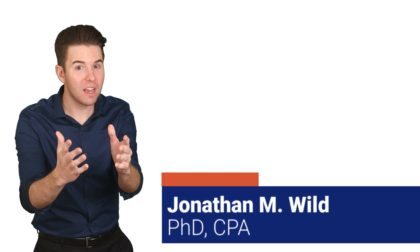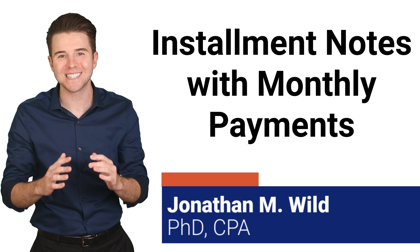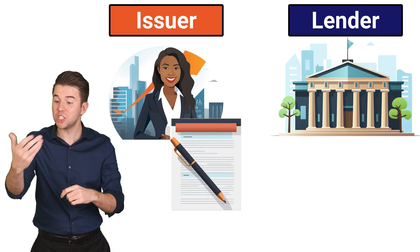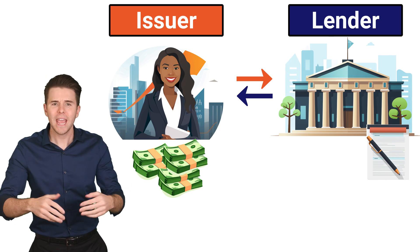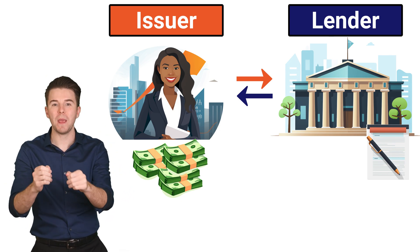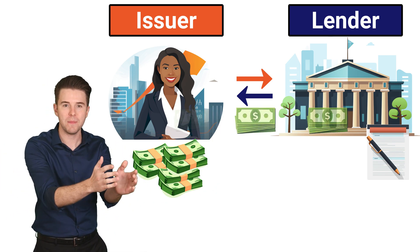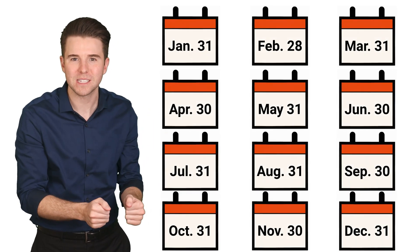Hi, I'm Jonathan Wild, and we cover how to account for installment notes with monthly payments. An installment note is a type of note payable that involves issuing a note in exchange for cash or other assets. In return, the issuer promises to pay back the principal of the note with interest through a series of payments to the lender. In this segment, we will cover installment notes with monthly payments, which are similar to monthly payments we might make for cars or student loans.